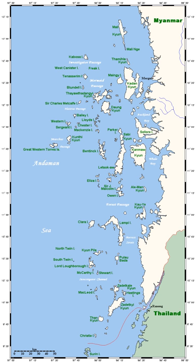Sets of islands formed close to the coast of a continent are considered continental archipelagos when they form part of the same continental shelf, when those islands are above water extensions of the shelf. The islands of the inland passage off the coast of British Columbia are an example.